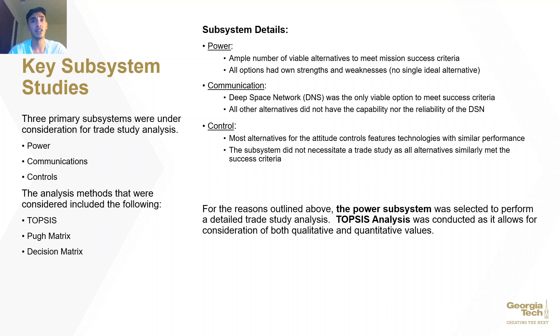Three subsystems were initially analyzed on the morph matrix as the three most essential parts of the spacecraft that would ultimately lead to mission success. These three systems were the power system, the communication system, and the control system. First, the power system had an ample number of alternatives, as you can see from the morph matrix. Each of these alternatives carried their own strengths and weaknesses, which meant that no one alternative would immediately be the best choice.